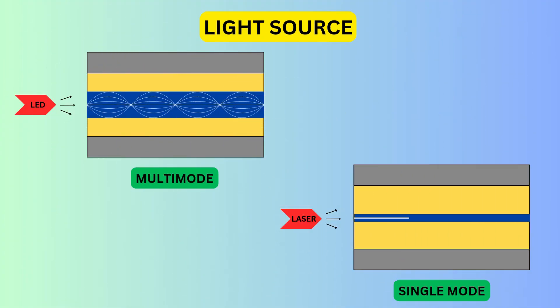For single-mode fiber, which has a narrow core, a laser is commonly used as the light source. For multi-mode fiber, which has a wider core, an LED (light-emitting diode) is often used as the light source.